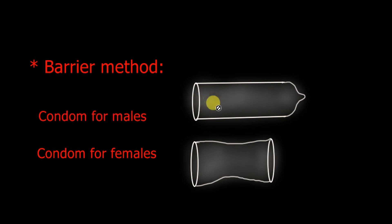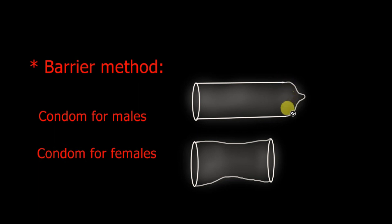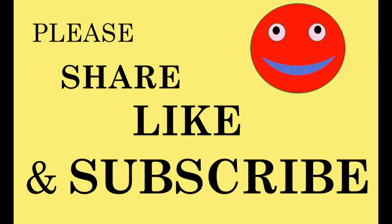Barrier methods like condoms for males and females also help protect individuals from sexually transmitted diseases. As coverings, they prevent the transmission of pathogens from male to female and vice versa. So condoms serve a dual purpose: birth control and STD prevention. This concludes our discussion on reproductive health and contraceptive methods.